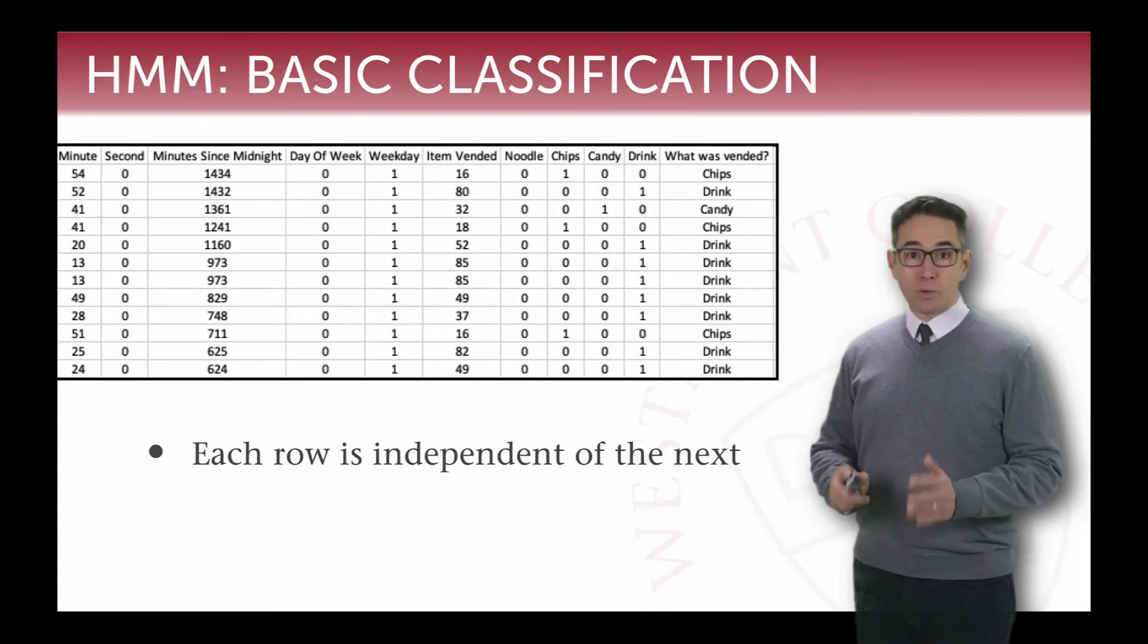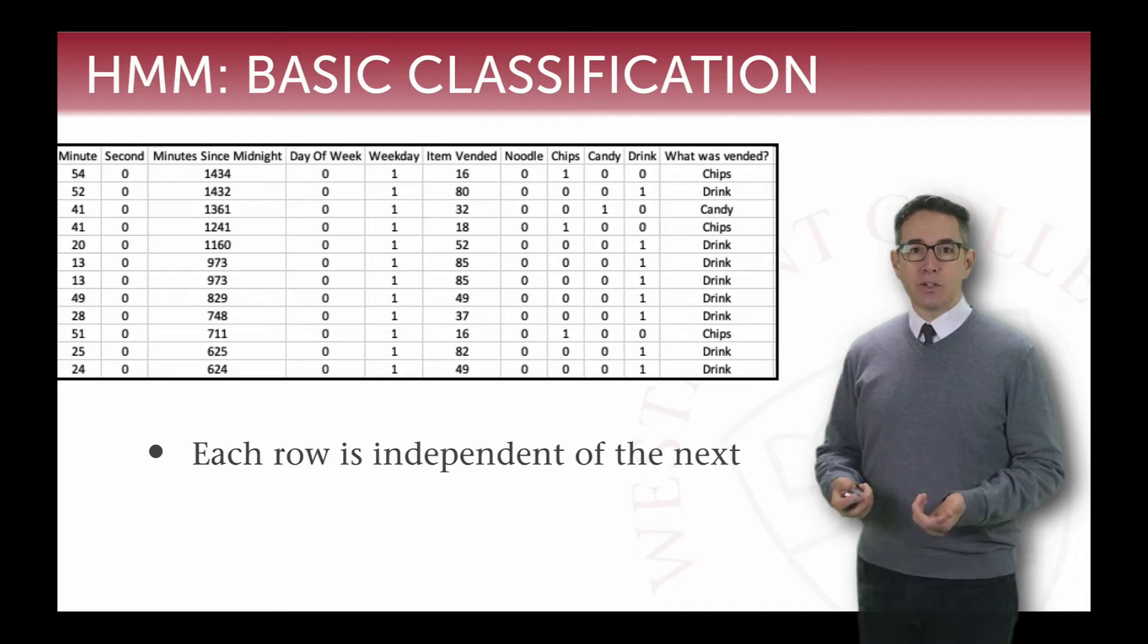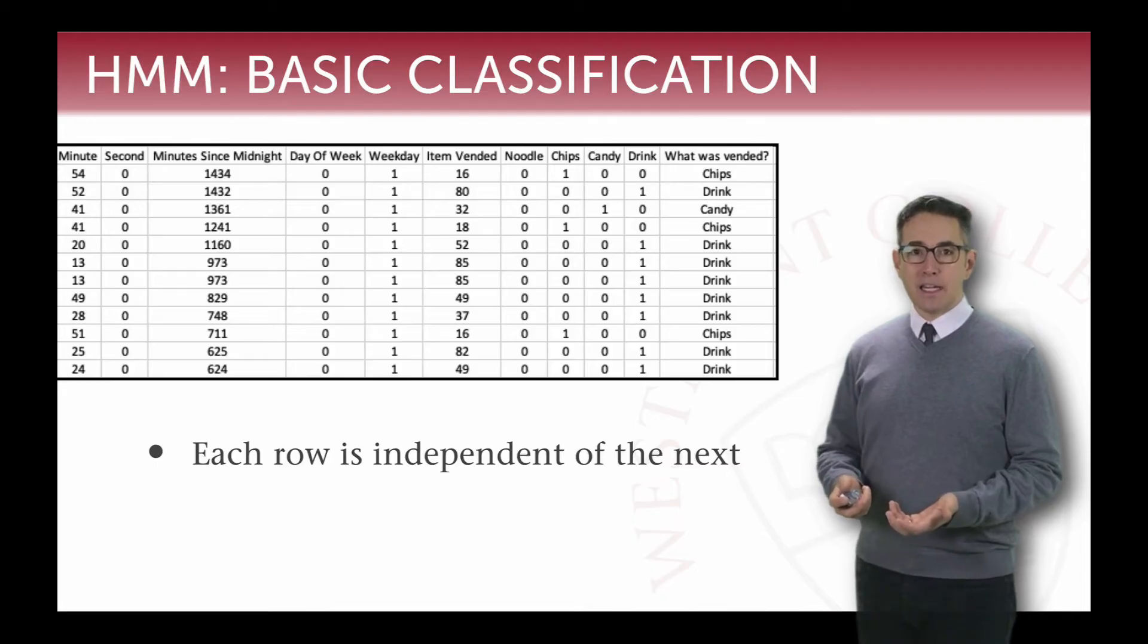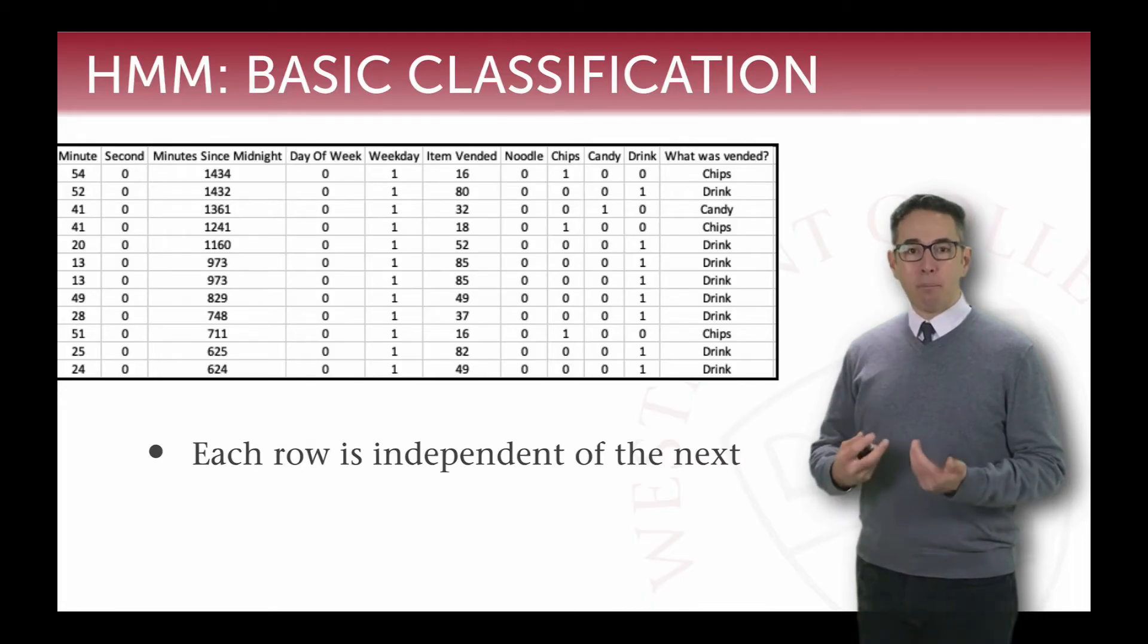Not that that's what's happening in reality, because in reality we can imagine that if someone goes to a vending machine, they're likely to buy a drink and something else. And so maybe you could do a better job of predicting each row if you assumed that the data was dependent, but what I'm saying is that in our modeling, we assumed that they were independent, not that they actually were in reality.